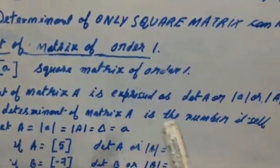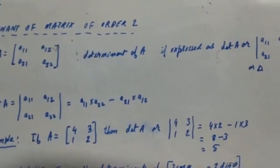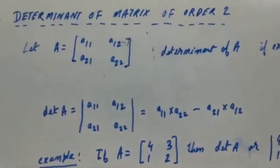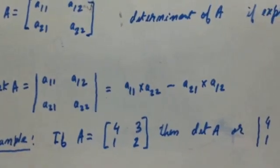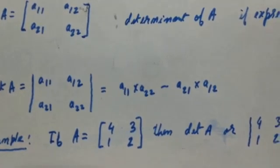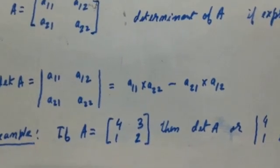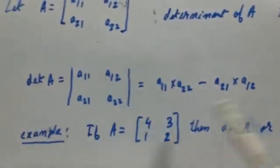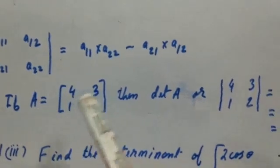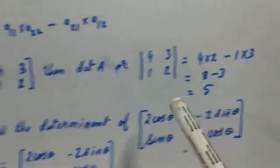The value of the determinant of a matrix of order one is the number itself. Now, for the determinant of a matrix of order two: a matrix of order two has four elements. The determinant of A is A₁₁ × A₂₂ minus A₂₁ × A₁₂ — that is the difference of the product of the principal diagonal elements. For example, for matrix A = [4, 3; 1, 2], the determinant is 4×2 minus 1×3, which equals 5.